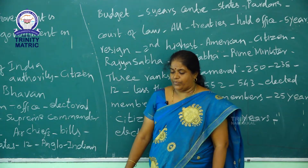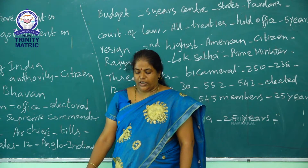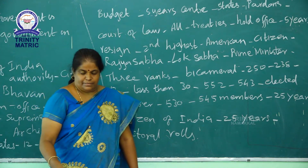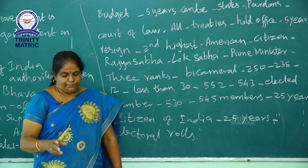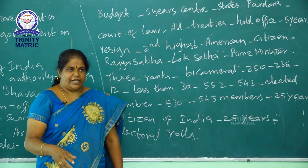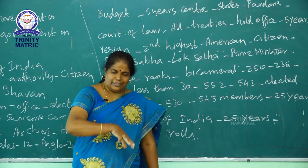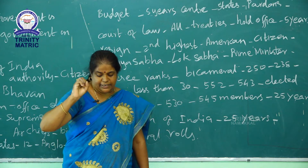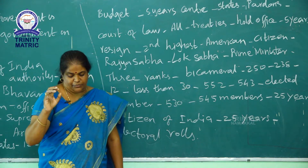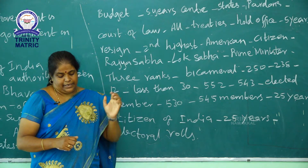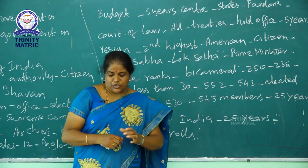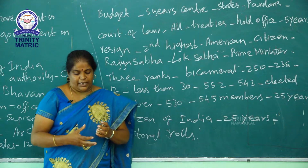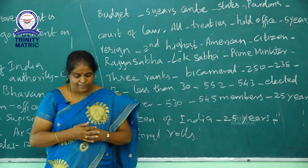Regarding financial power: money bills can be introduced in parliament only with the president's prior recommendation. The annual budget is presented before parliament with the permission of the president. He constitutes a finance commission every 5 years, or on the demand of a state, to recommend the distribution of revenue between the central and state governments.